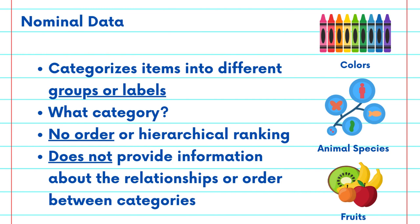Nominal data is incredibly useful for classifying and organizing information, but it doesn't provide any information about relationship or order between categories.